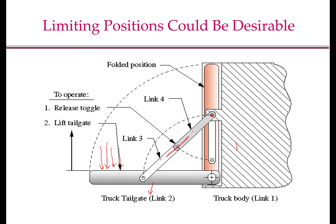So in essence, a large amount of load can be supported by the truck tailgate in this configuration. To get the tailgate into a folded configuration, we have to first apply a force to release this toggle or move away from this toggle configuration, and then applying a small force will allow us to get into the folded position. This kind of mechanism, where we actually want to support a large load at a certain configuration, is used in many other different places, such as a folding chair.